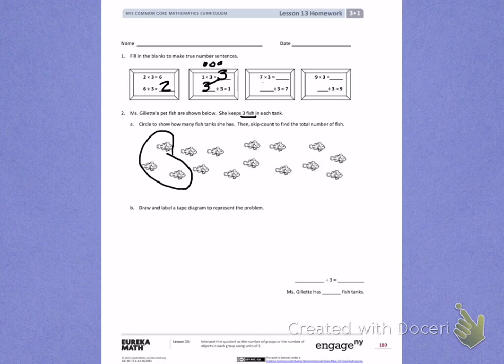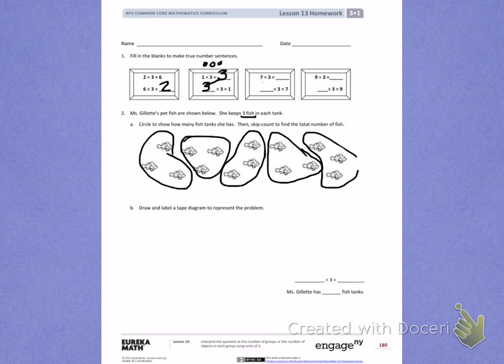3. That's 1 tank of fish. 2 tanks of fish. 3 tanks of fish. 4 tanks of fish. 5 tanks of fish.